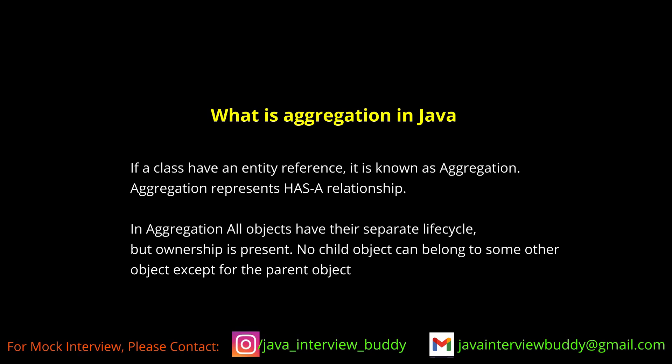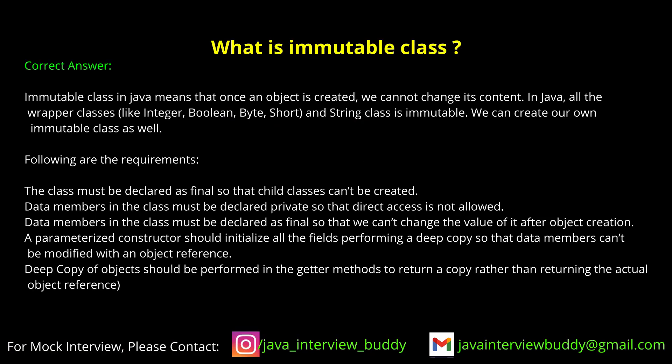What is aggregation? Aggregation means tight coupling — it has a HAS-A relationship. What is an immutable class? An immutable class is one whose properties you cannot change at runtime after it is created. Once you create an immutable class you are not supposed to change the properties; if you need to change them you need to create a new instance of that class.